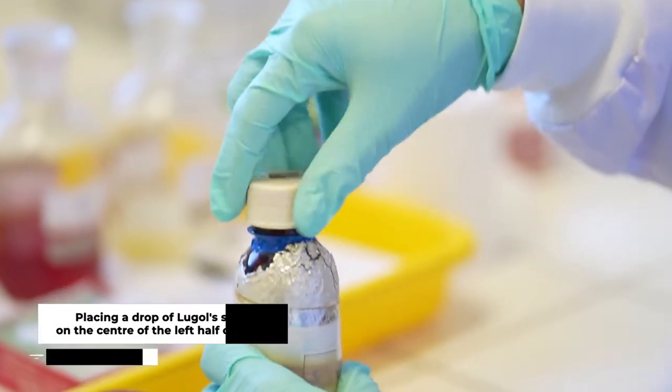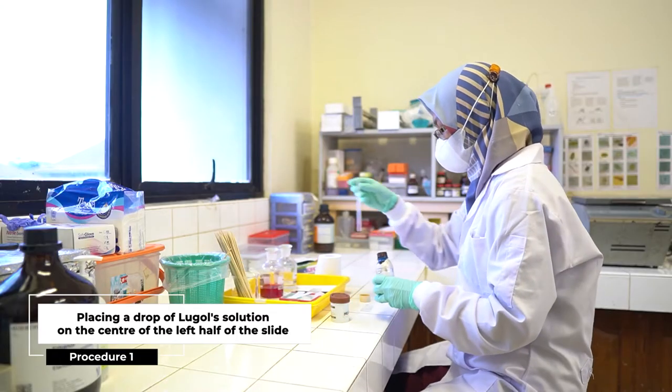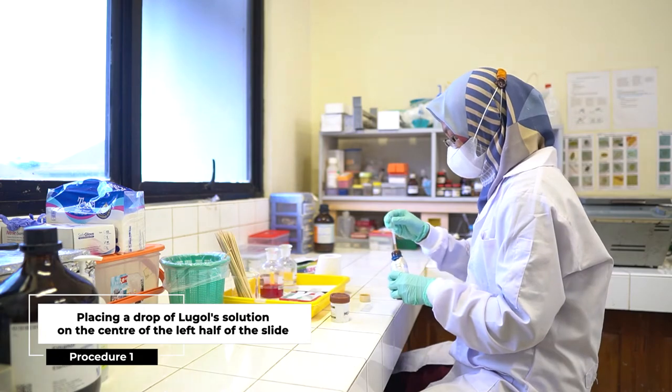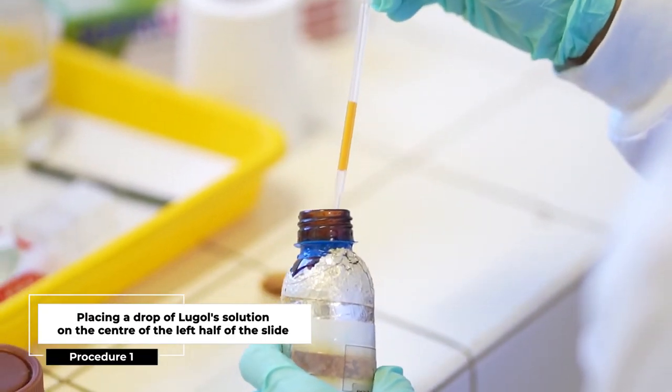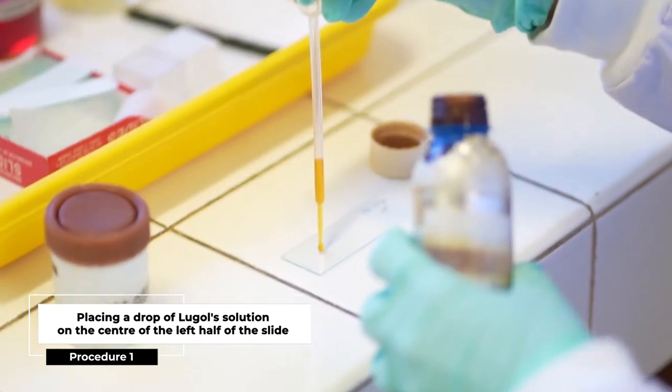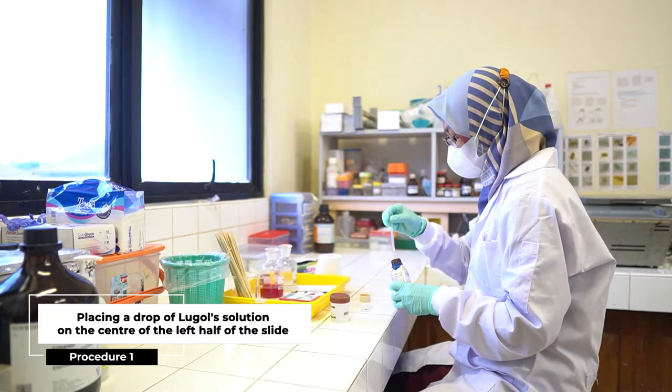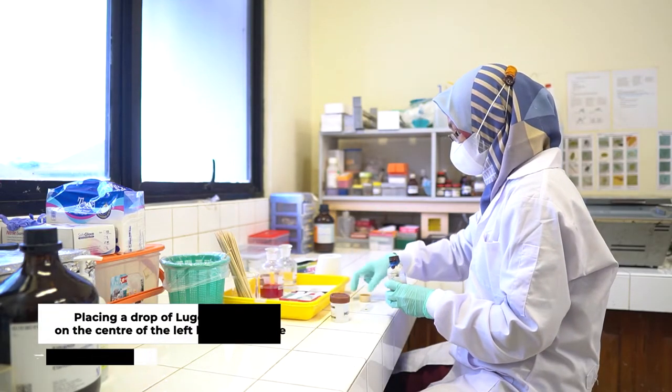First, place a drop of saline on the center of the left half of the slide and a drop of Lugol's solution on the center of the right half of the slide on a microscopic slide which has been labeled with an ID number.